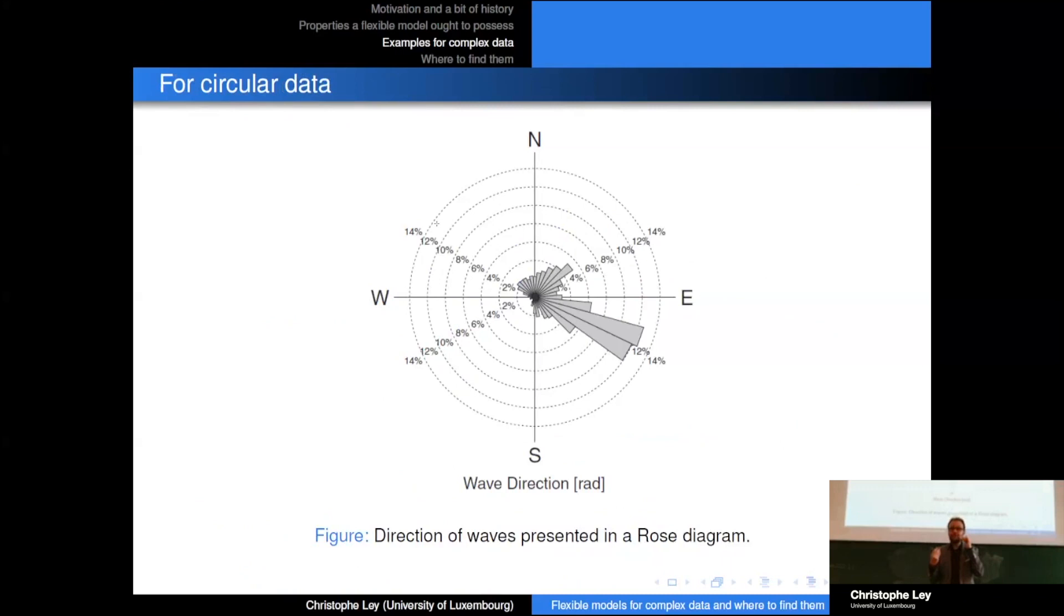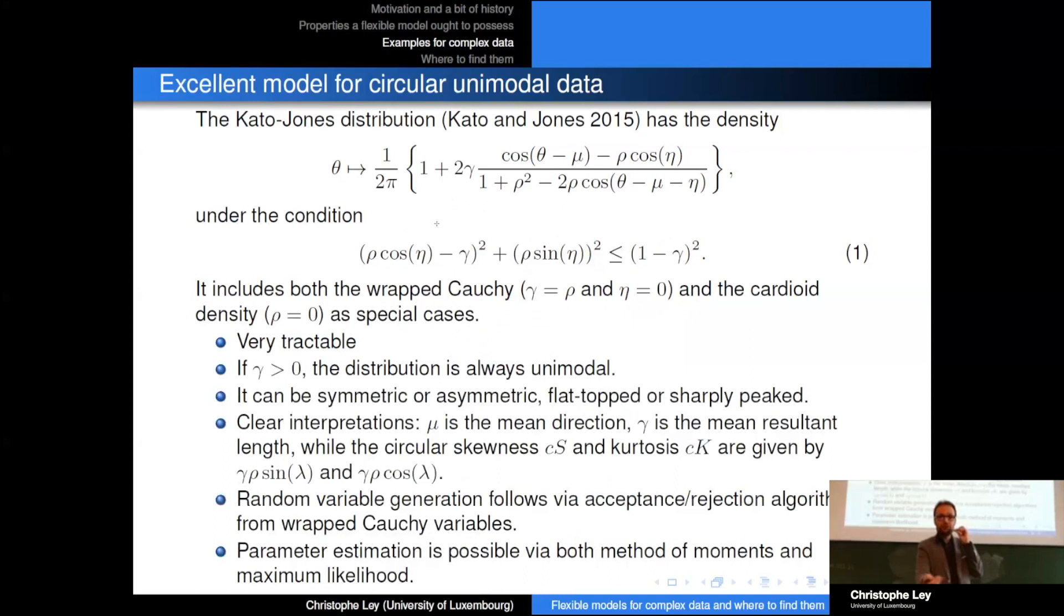Since we have many experts here in directional statistics, I also show an example of circular data. Here you see one such example - it is the directions of waves presented as a rose diagram. We see here that we have the case of a bimodal data set. What is so difficult with circular data is you can represent this as data on the interval zero to 2π, but since it's a circle, the density at the value zero has to coincide with the density at the value 2π. For circular data I just want to give you one example of a distribution that I think is a very good flexible distribution, and this is the Kato-Jones model, proposed by Shogo together with Chris Jones in 2015.